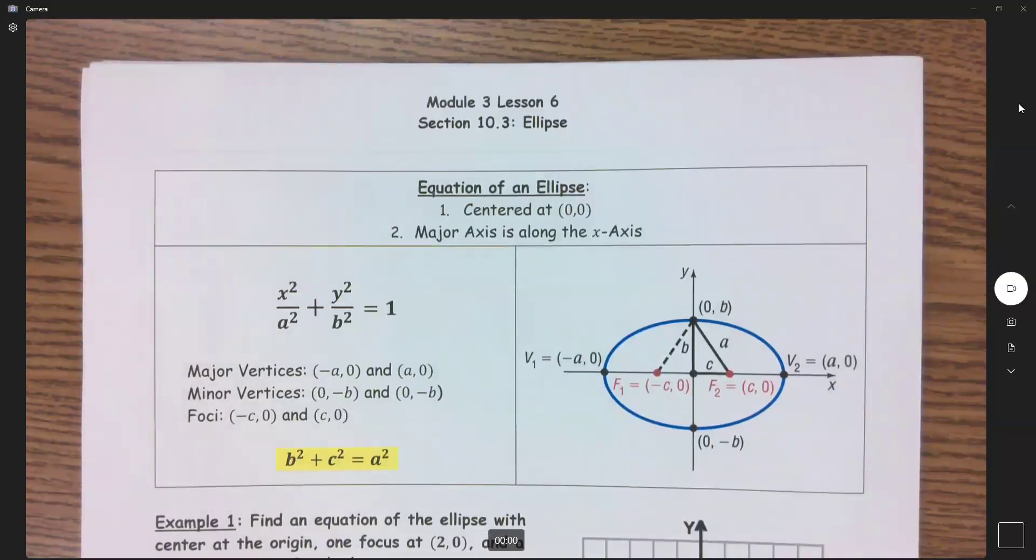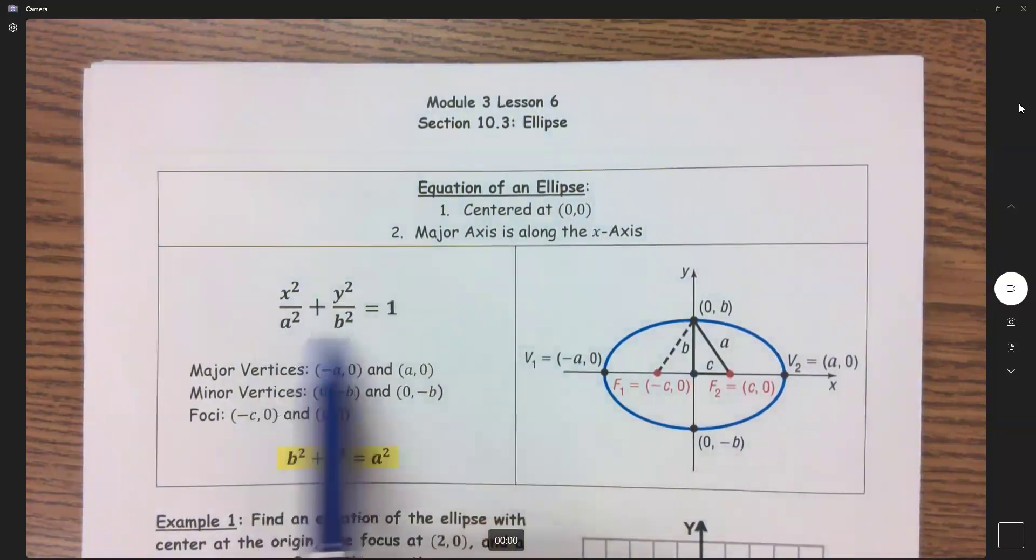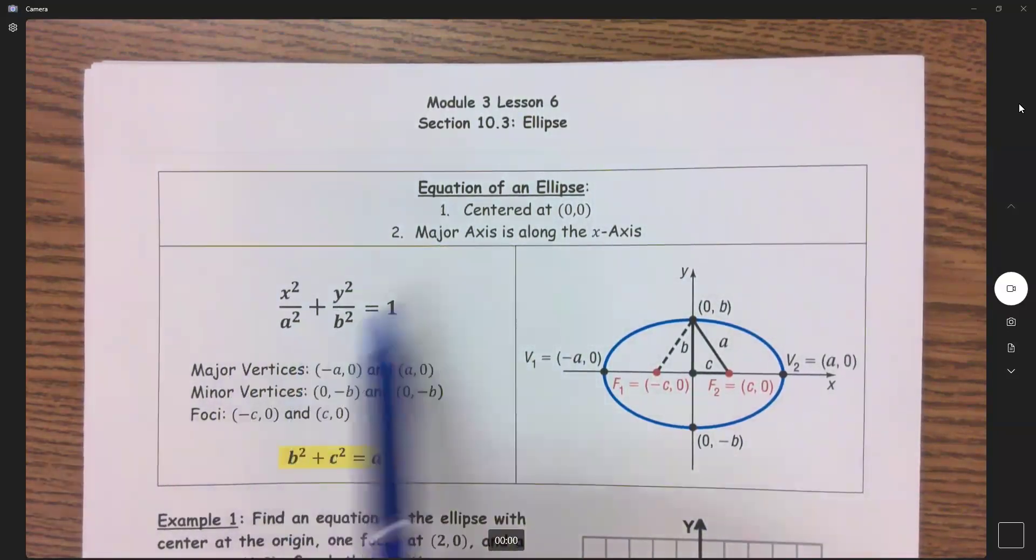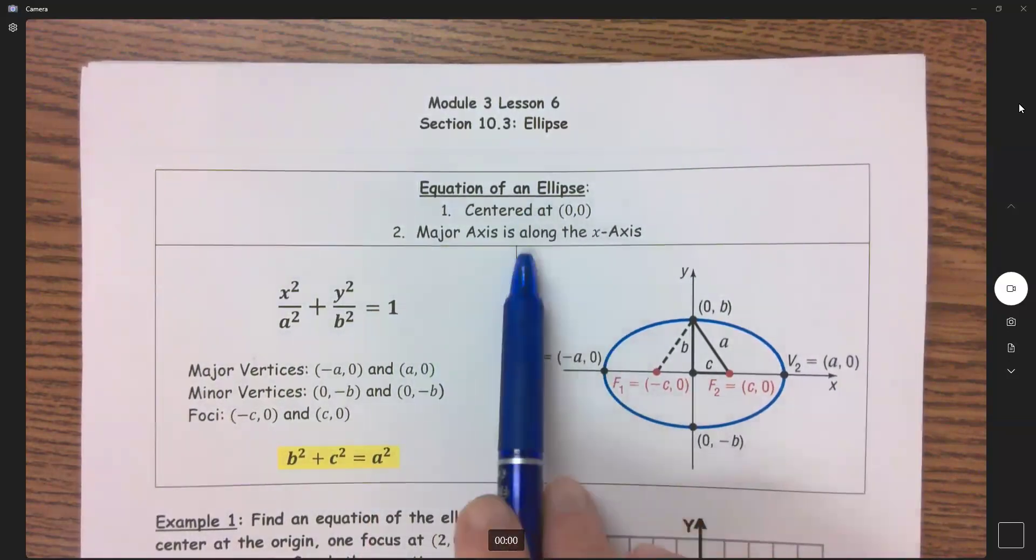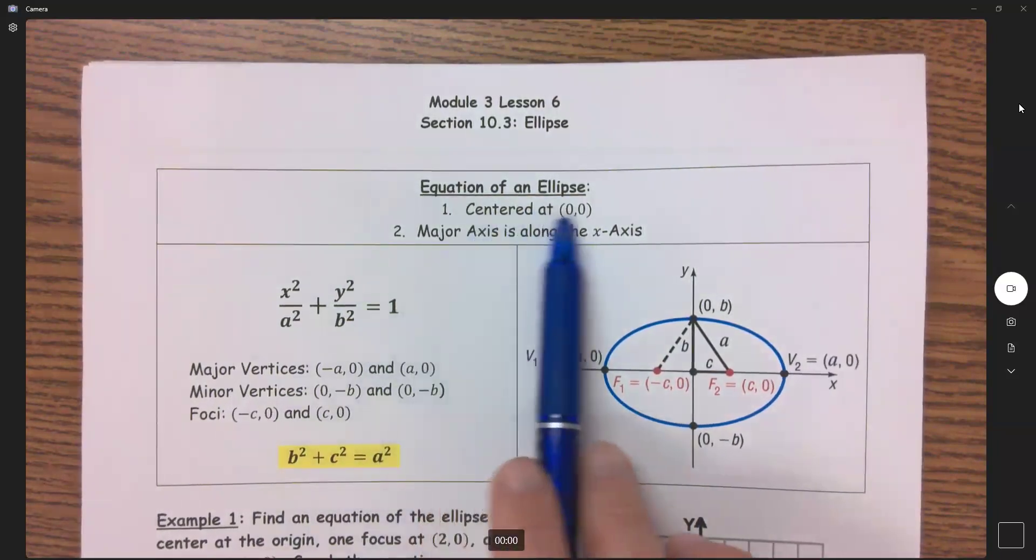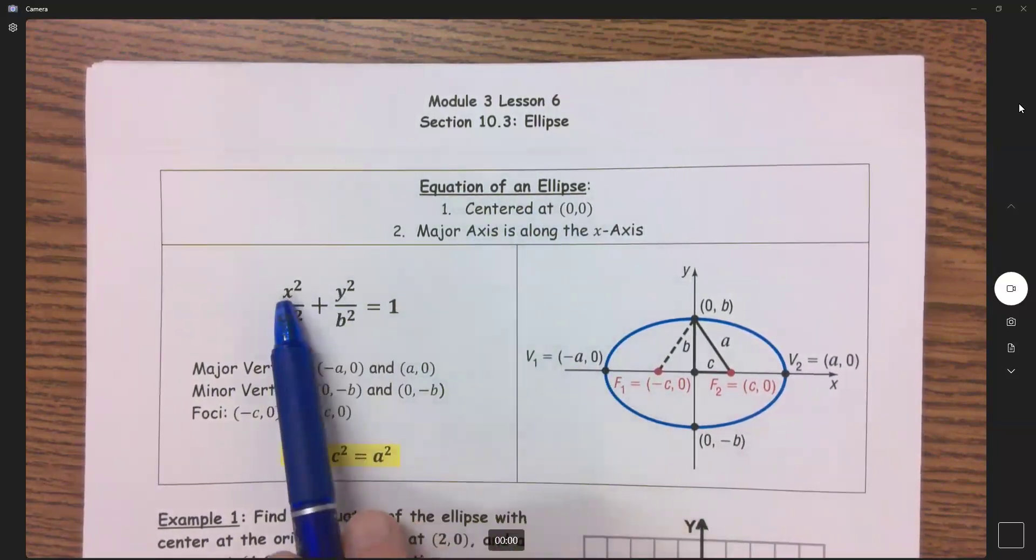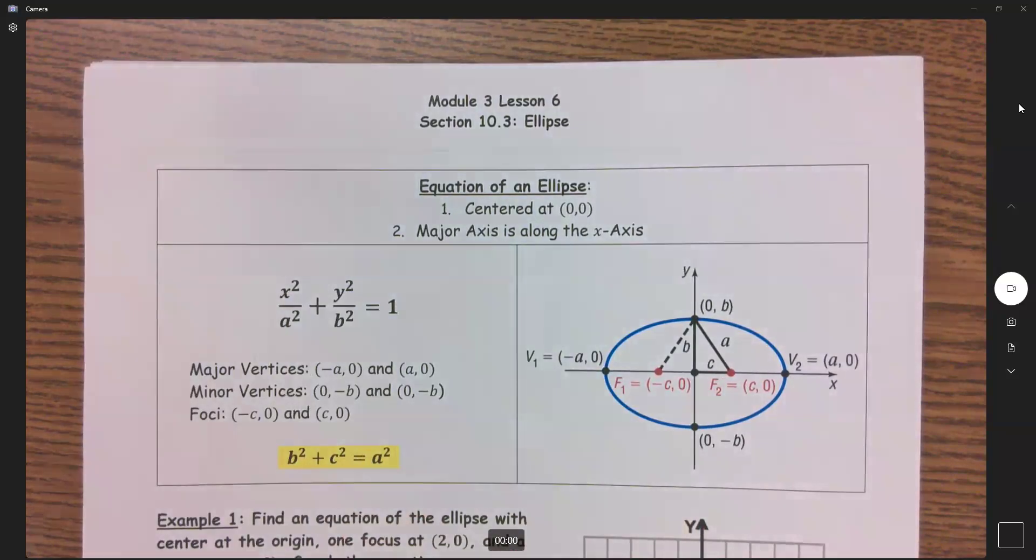We're going to start by graphing ellipses that are centered at the origin. Here is my most basic formula when it is centered at the origin. My major axis is along the x. So how do I know these two things by looking at this formula? I can tell it's centered at 0,0 because we have nothing in parentheses with that x or that y.